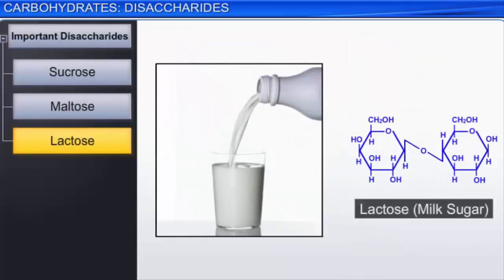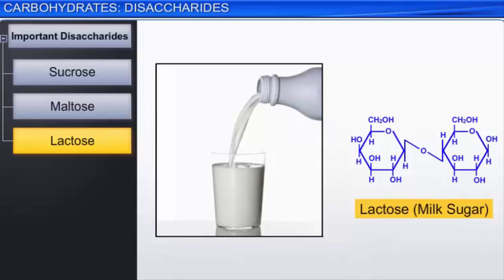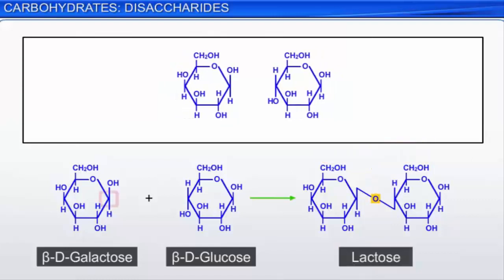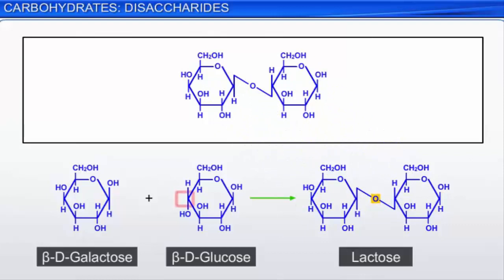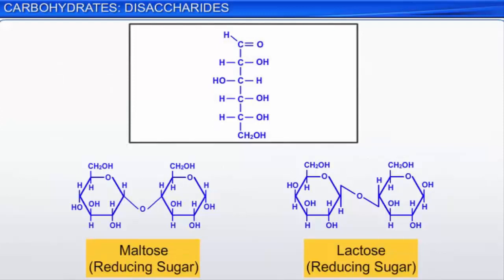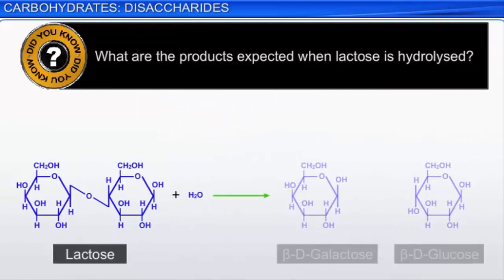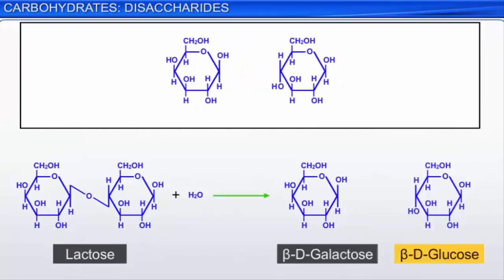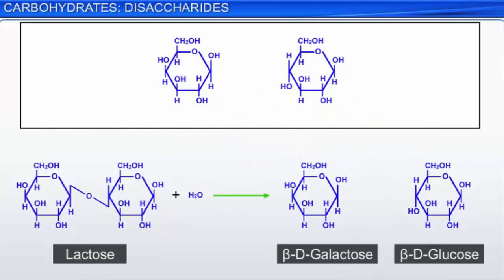Lactose is a disaccharide present in milk, so it is sometimes referred to as milk sugar. Lactose is composed of beta-D-galactose and beta-D-glucose. The glycosidic linkage in lactose forms between C1 of galactose and C4 of glucose. Like maltose, lactose is a reducing sugar due to the presence of a free aldehyde group at C1 of the glucose unit. When lactose is hydrolyzed, it would produce galactose and glucose in equal proportions. Here we see the Haworth projections of lactose and the hydrolysis products.